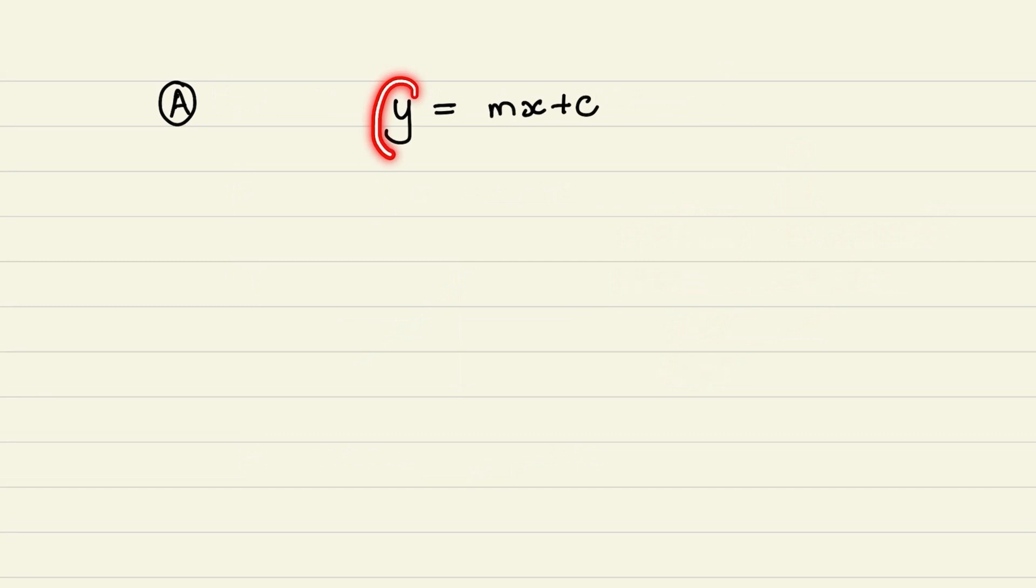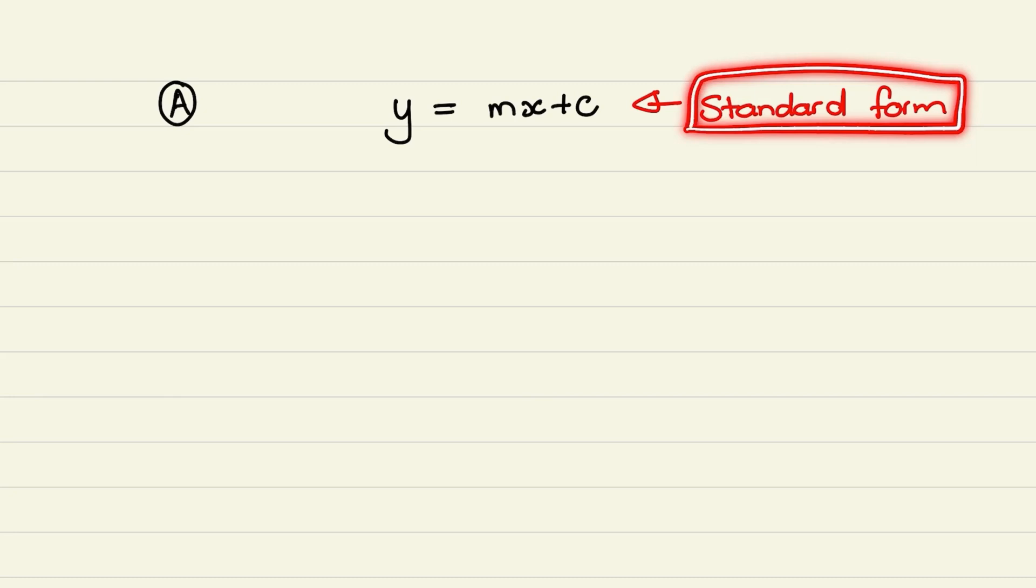In our first example, we have y is equal to mx plus c. When we write an equation with y isolated on one side, it is known as the standard form of that equation. And in standard form, the gradient is represented by m.